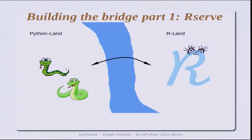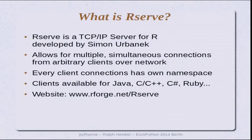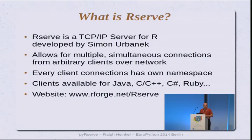We wanted to build a bridge between Python and R, and to be able to run R on a different computer — on a farm of computers even. The first piece of that bridge, the first socket, is R-Serve. R-Serve is a TCP/IP server for R, developed by Simon Urbanek. It allows multiple simultaneous connections from an arbitrary number of clients, as long as the machine can handle it.